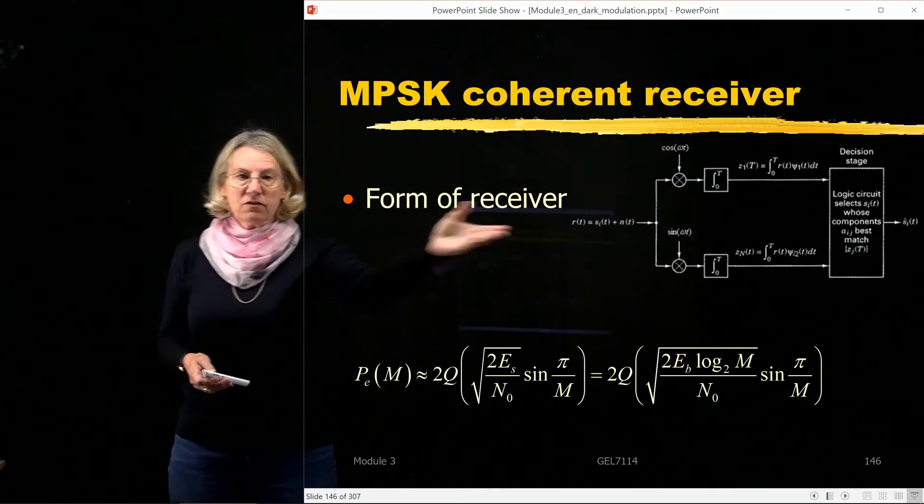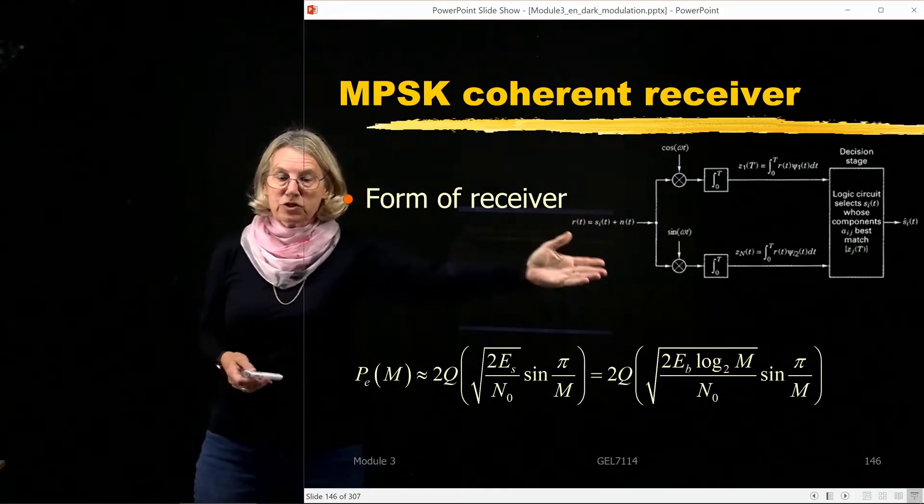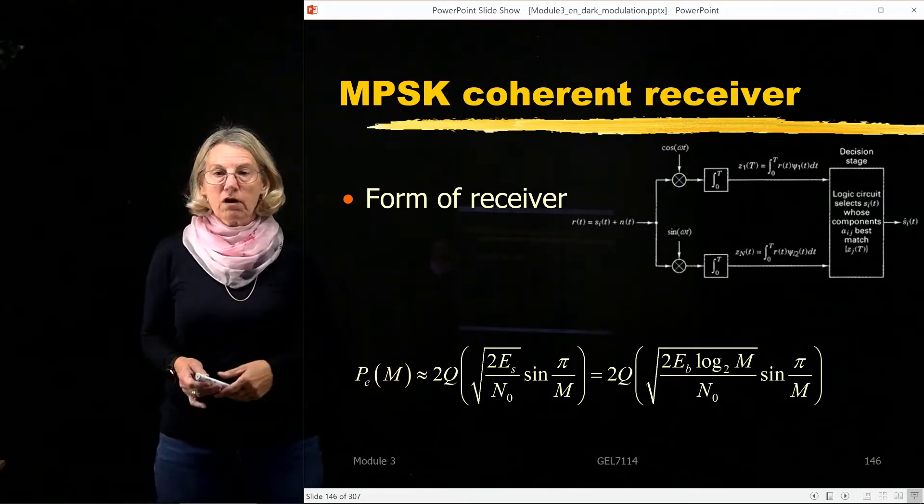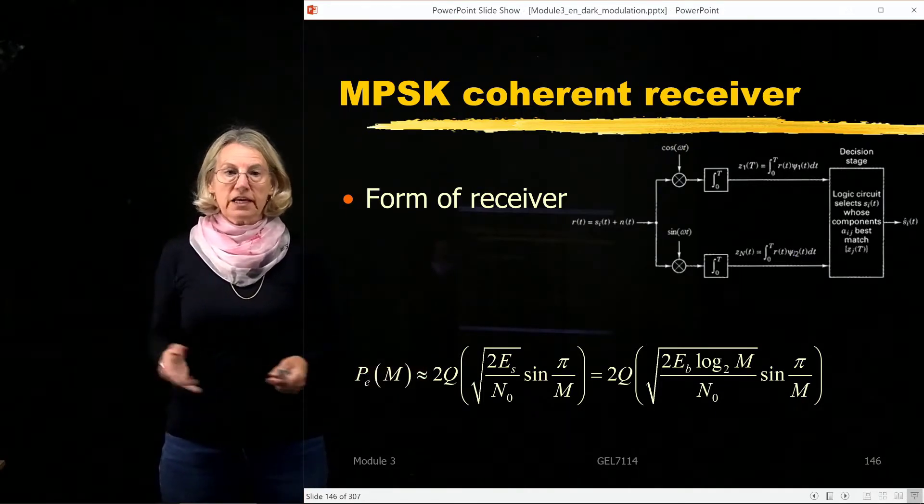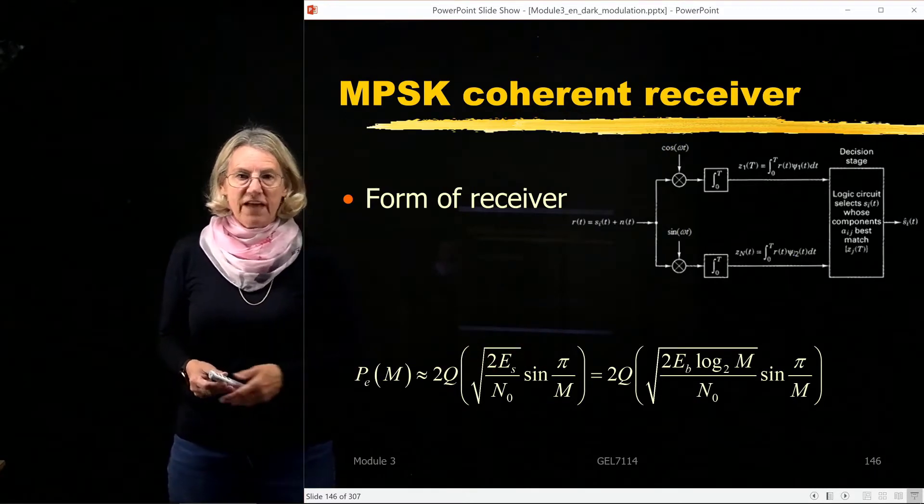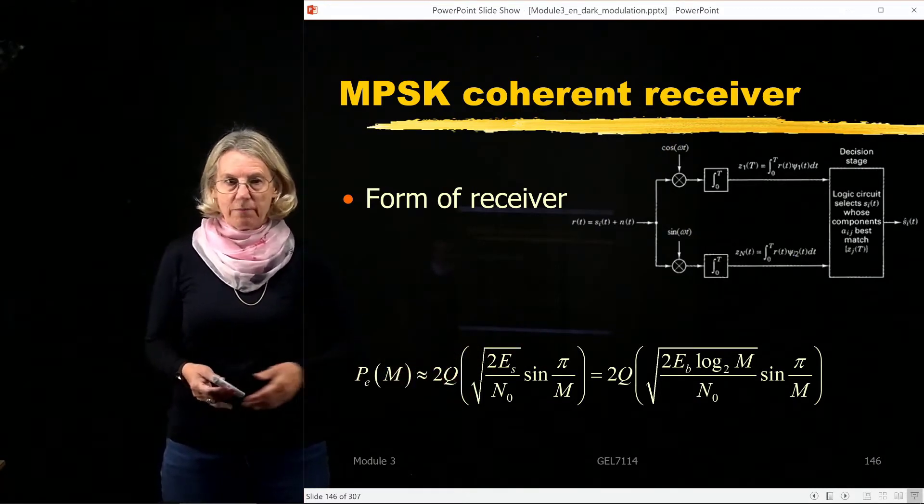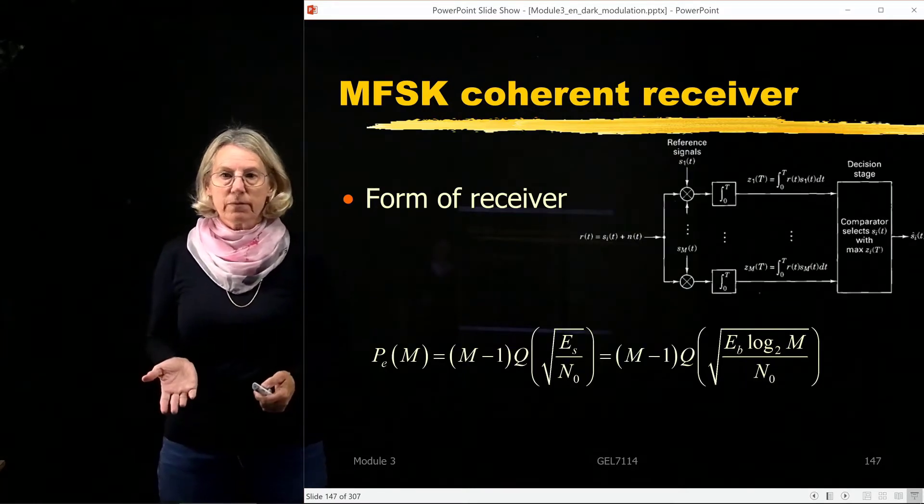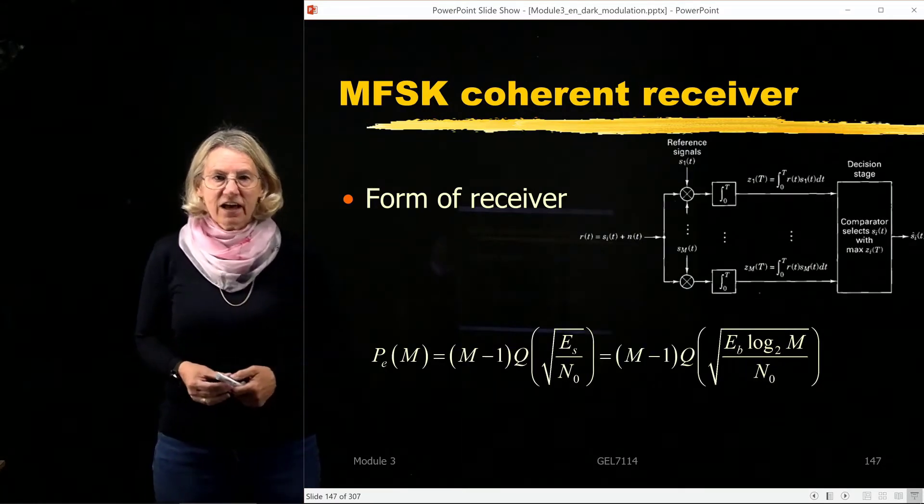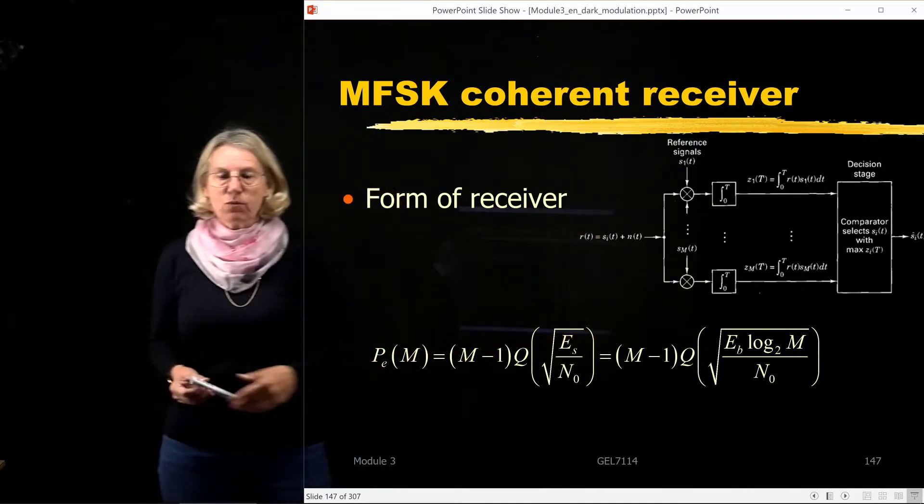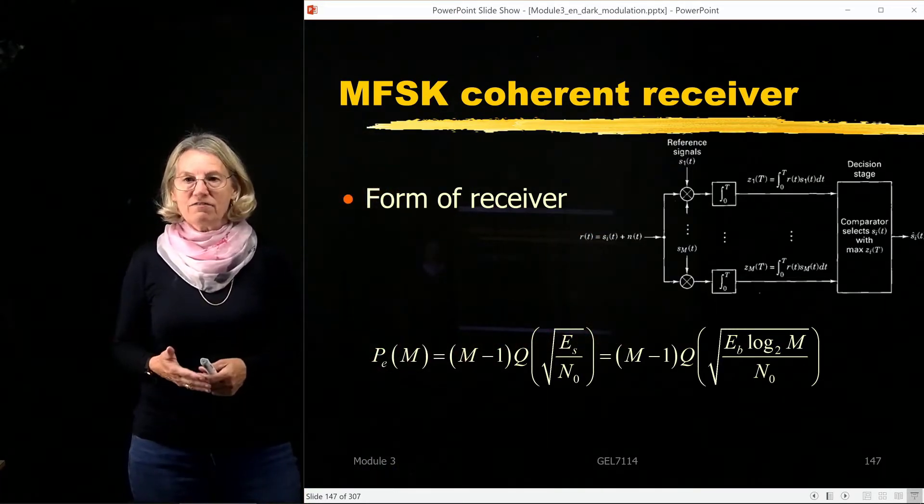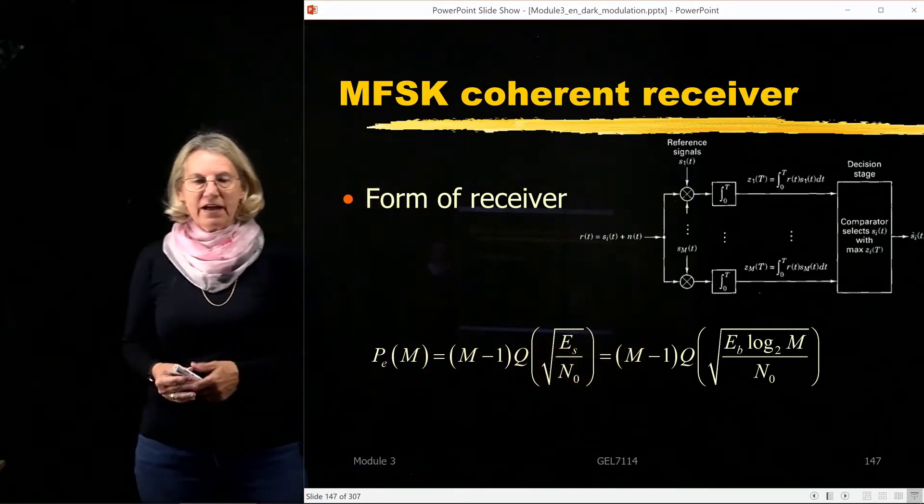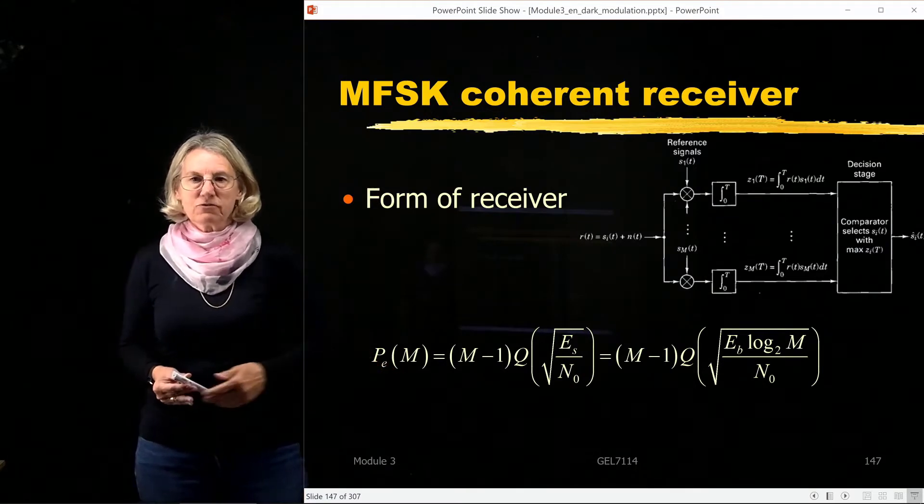There would be a form of the receiver. You would see there were two branches, and then there would be our calculation for PSK for the probability of error. As a function of M, you see this probability of error. We do that also for other modulation formats, for instance FSK. In this case there are M branches because you need one branch for each symbol, and the performance is given by this expression for FSK.